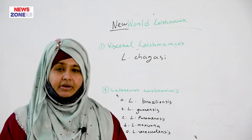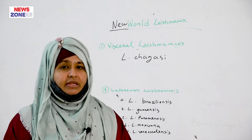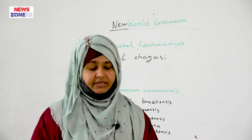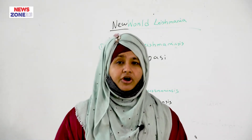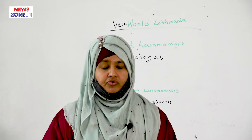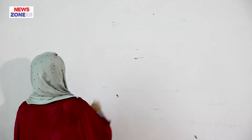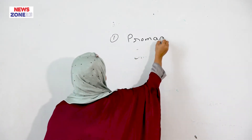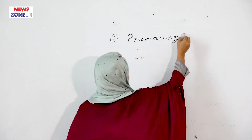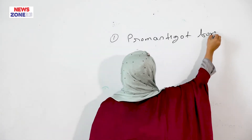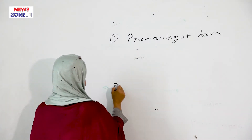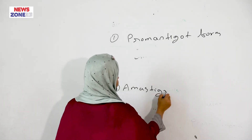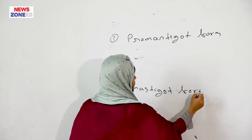In our country, Leishmania donovani is common. Leishmania donovani causes visceral Leishmaniasis. There are two morphological forms in Leishmania donovani: one, the promastigote form, and two, the amastigote form.